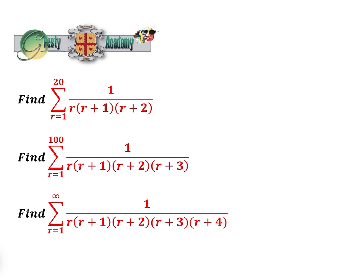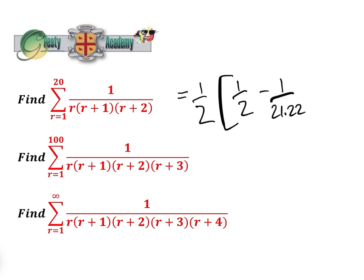I haven't pre-worked them out. So the sum of r equals 1 to 20 of 1 over r(r+1)(r+2), and I'm solving this by inspection — and I'll explain why later on.